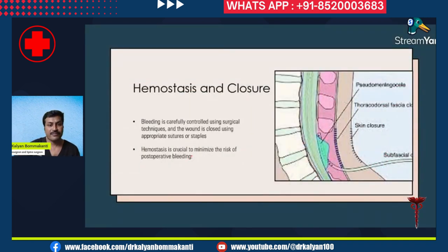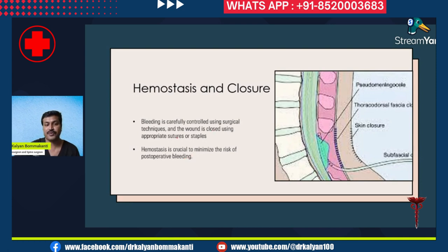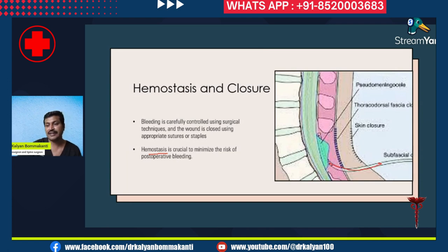Controlling bleeding is very important. Ensure perfect hemostasis — that the bleeding is completely controlled — and then the wound is closed using appropriate sutures. Hemostasis is crucial to minimize the risk of post-operative bleeding. A drain is usually placed so that if there is any bleeding, it drains out.